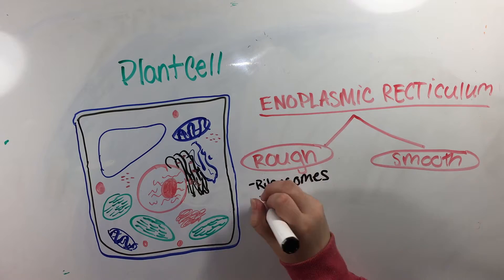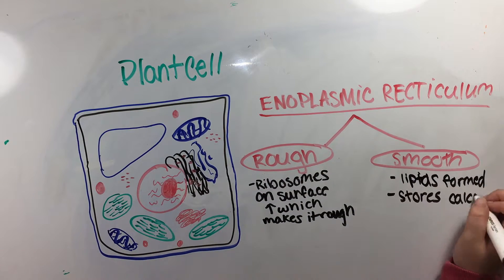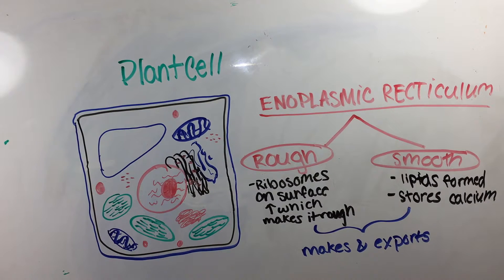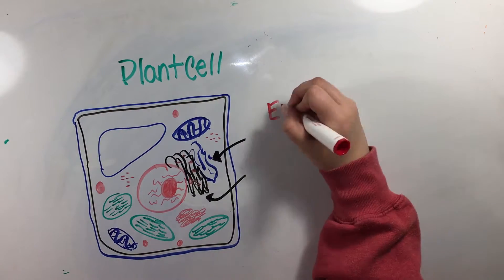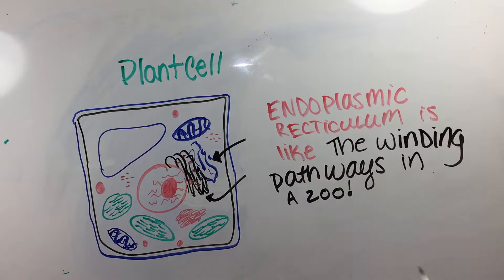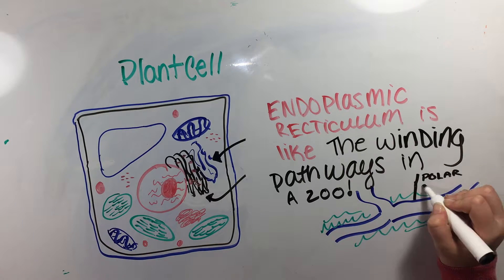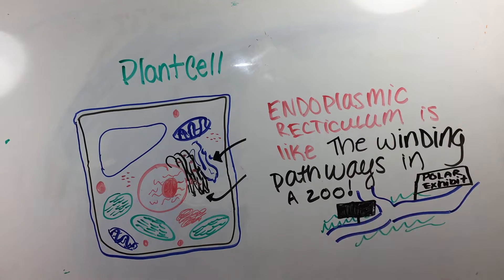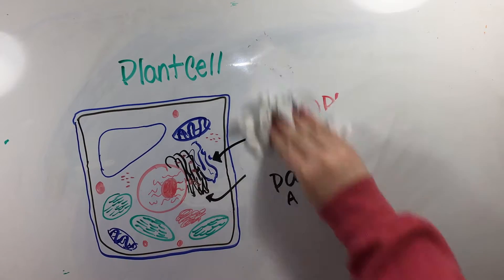Rough ER has ribosomes on its surface, and proteins and other materials are assembled and exported from the cell here. The smooth ER is where lipid components of the cell membrane are assembled and exported, in addition to stored calcium. The endoplasmic reticulum is like the pathways that wind throughout the zoo connecting areas, allowing people to travel from place to place.